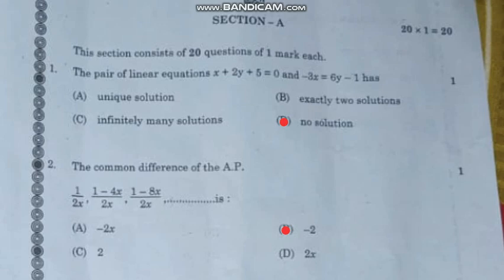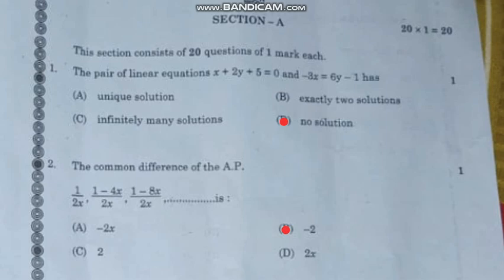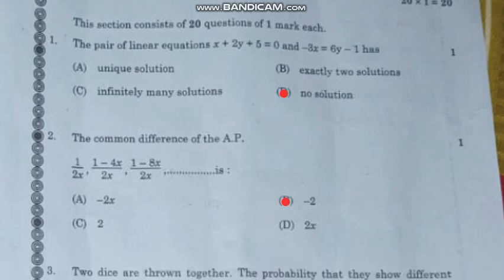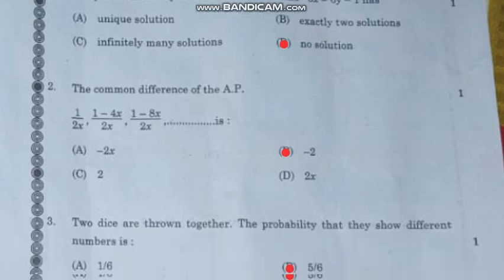Question number 1: If the pair of linear equations x + 2y + 5 = 0 and -3x = 5y - 1 has this characteristic, the correct answer is option D, no solution.